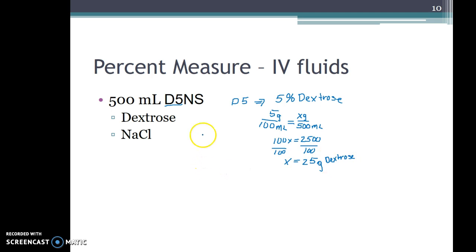Now for the second half of the problem, the NS or normal saline. Normal saline is 0.9% sodium chloride, and we want to turn that 0.9% into a fraction. We put 0.9 over 100 because percent is per 100.